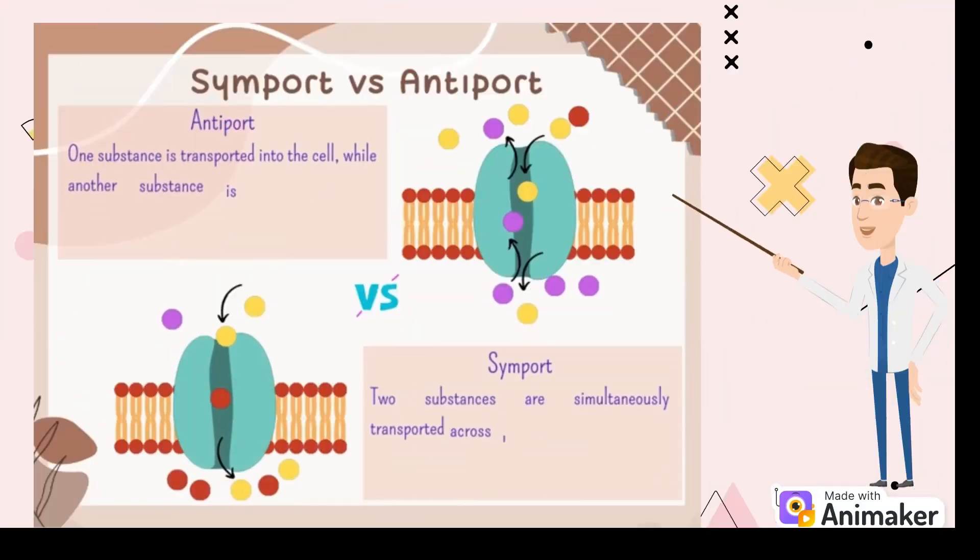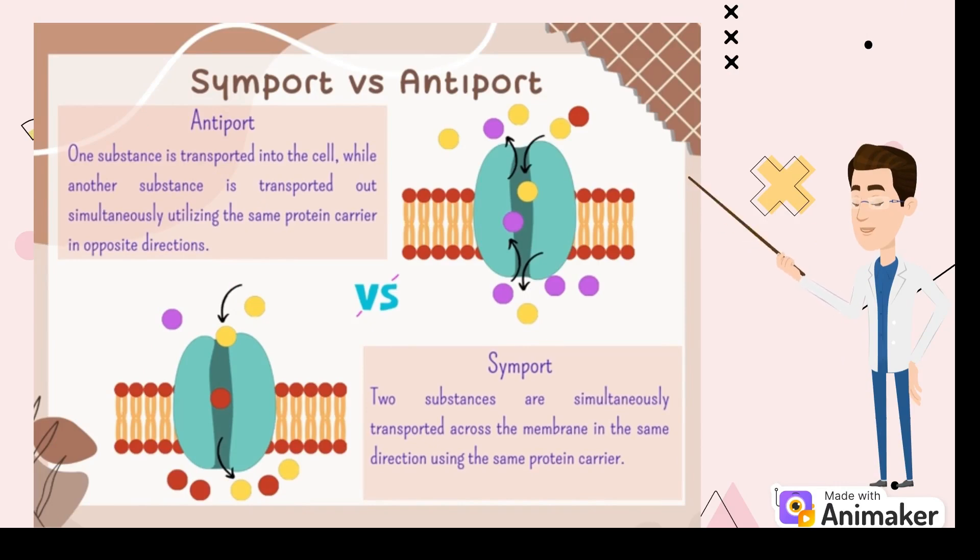Co-transport is an essential process that enables two substances to move across a cell membrane simultaneously. It's powered by specialized protein carriers and there are two main types: symport and antiport.